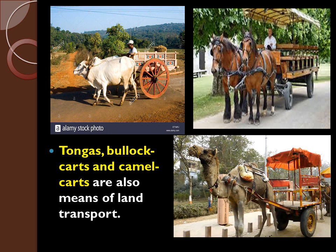Have you seen in villages? All three we can see in villages — bullock cart, camel cart, and tonga. It is not a horse cart, it is called a tonga. All these animals are used for land transport because they can carry huge goods and move people from one place to another. So tongas, bullock carts, and camel carts are also means of land transport.